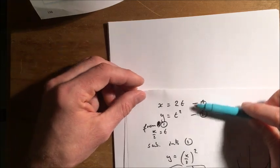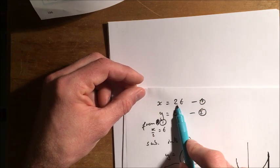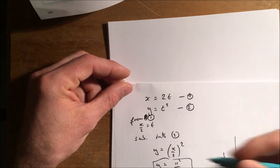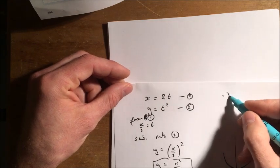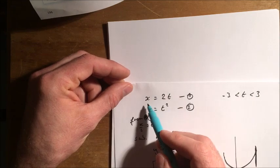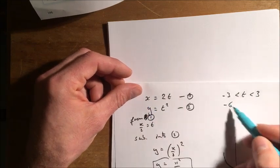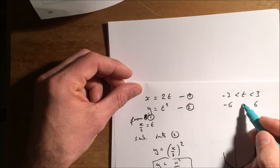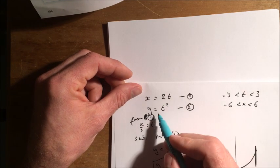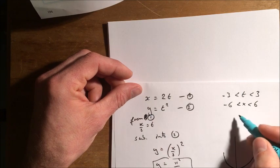So I know that the range is going to be positive values of Y. And the domain is going to be all values of X. Perhaps we could have seen that here. I'm just looking at the question again. T isn't all values, is it? T goes from minus 3 to 3. So if T goes from minus 3 to 3, the lowest value X can be is minus 6. The highest value X can be is 6. So the domain is values of X between minus 6 and 6.